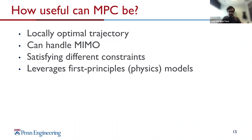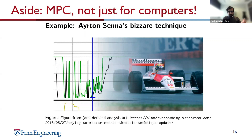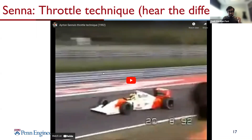MPC is implemented on computers for autonomous cars, but humans also work in a way very similar to model predictive control. An example from the racing domain is the way Ayrton Senna used to drive — especially his throttle technique, which was noticeably different from other drivers of his era. I'm going to play a video and ask you to pay close attention to the sound of the engine.